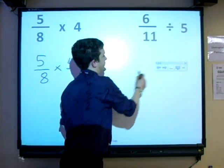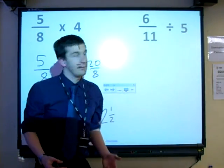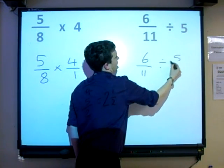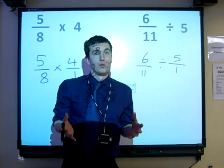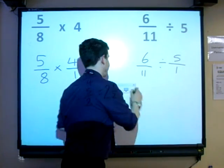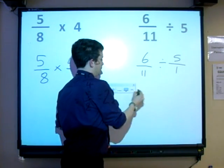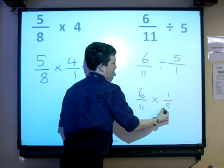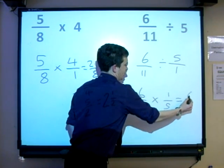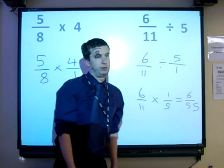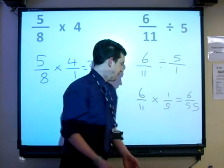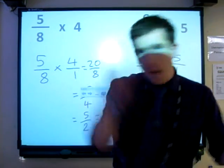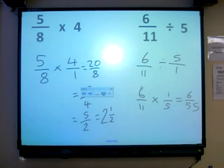And it's just the same over here, so rewrite the question first. 6/11 divide by 5 over 1. The one rule we've got to remember for that, flip reverse it. So let's do that. 6 over 11 times 1 over 5, and that gives you 6 over 55. And we're done, and that's it. That is how to multiply and divide fractions.